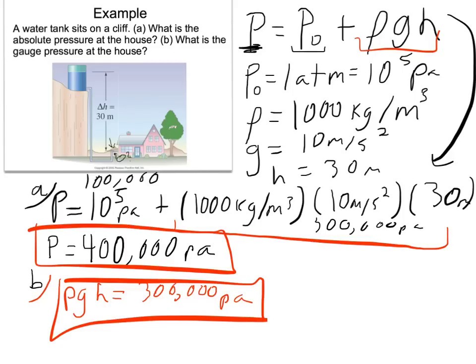So the actual pressure at the house is 400,000 pascals, which includes the fact that Earth's atmosphere is already pushing on that water. But if we just want to know what a gauge would read — and gauges on Earth are generally set to read zero when nothing's attached — the gauge ignores the atmosphere of Earth and just reads 300,000 pascals. A problem asking for absolute pressure wants P₀ plus rho G H. If it asks what a gauge would read, it just wants rho G H.